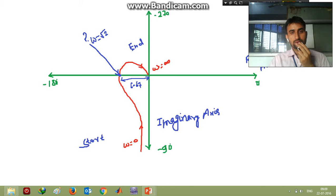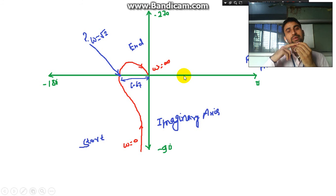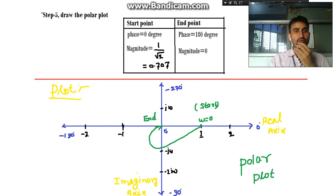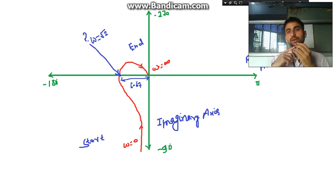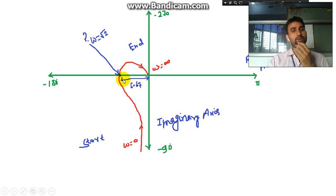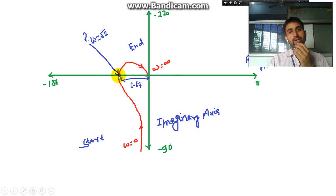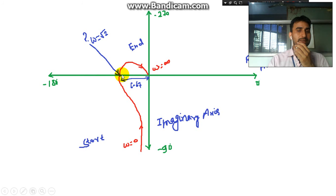Good morning everyone. In the previous class we studied how to draw the polar plot for type 0 and type 1 systems. So far we have only found the starting point and end point, with an approximation of the path in between. Now in this session we will find out at which exact point the polar plot intersects the real axis or imaginary axis and what the exact values are at those intersections.